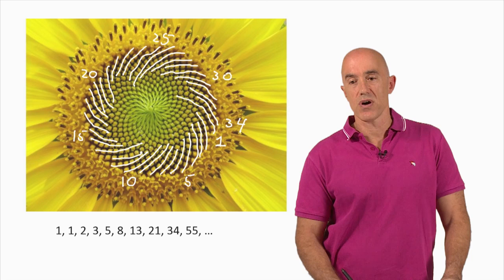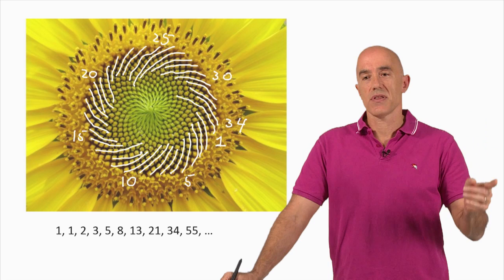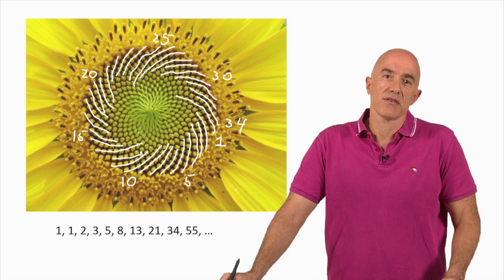Here's our Fibonacci numbers on the bottom: one, one, two, three, five, eight, thirteen, twenty-one, thirty-four. Thirty-four is a Fibonacci number. So we counted the number of spirals that are going clockwise in this sunflower head. We get thirty-four, and thirty-four is the Fibonacci number.